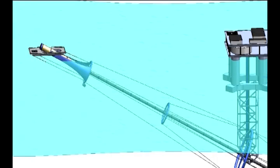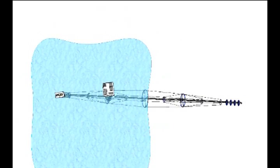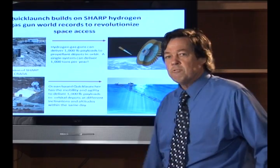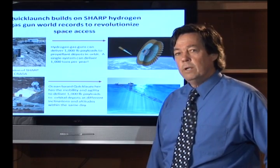It maps now into what's called QuickLaunch, which is an aquatic version using the same propellant, namely hydrogen, which will enable us to launch 1,000-pound payloads day in and day out, as many as 4 million pounds per year into low orbit.